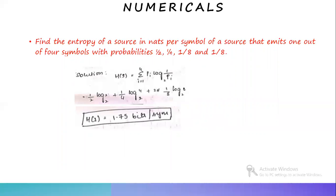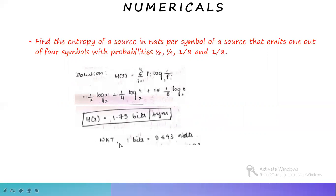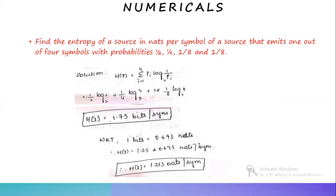Now we need to convert bits into nats. Keep in mind that 1 bit equals 0.693 nats. So 1.75 bits equals 1.75 into 0.693 nats per symbol. Solving this gives H(S) equal to 1.213 nats per symbol. This concludes the topic of average information content for independent sequences.